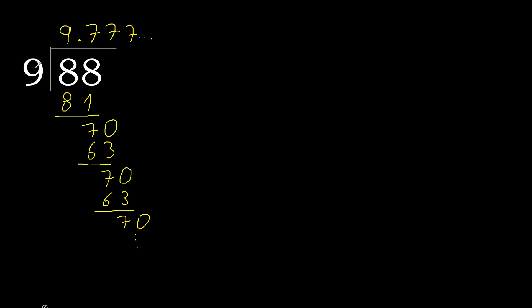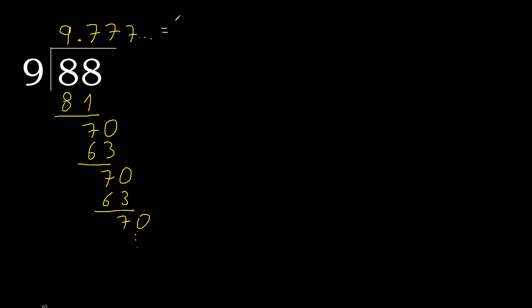88 divided by 9 is here. After the point: 7, repeat — therefore like this, repeat. Equal. Finish it.